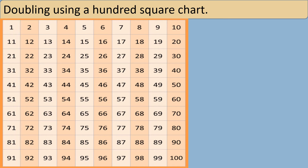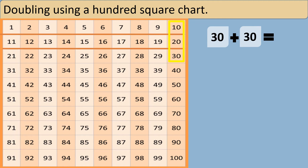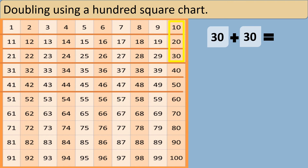Let's find doubles using a 100s chart. We have to find the double of 30. We have to add 30 more to the number 30. We know that 30 has three 10s in it: 10, 20, 30. So we need to add 3 more 10s to find the double of 30: 1, 2, 3. By counting on and adding 3 more 10s, I reach the number 60. So the double of 30 is 60.